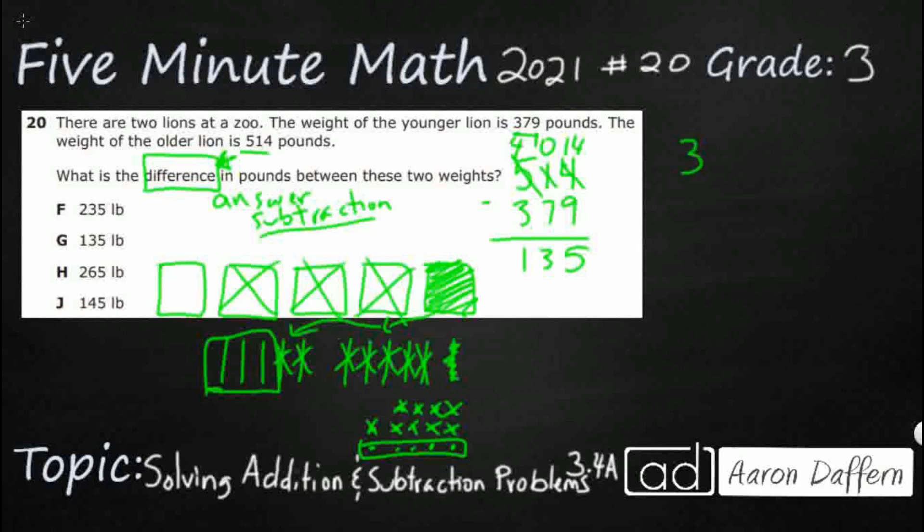Let's just double check. Let's add 379. Let's add 135, see if I get back up to 514. 9 and 5 is 14. Carry the 1. 7 and 3 is 10. Add that 1 back in. It is going to be 11.